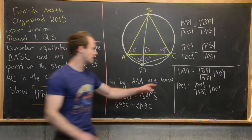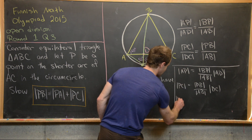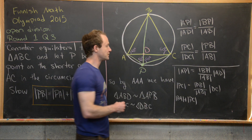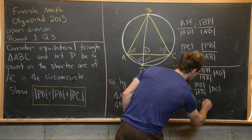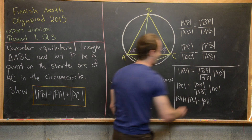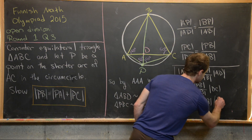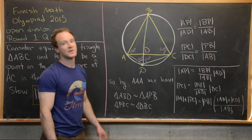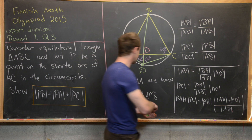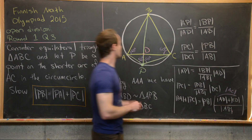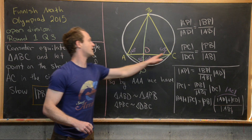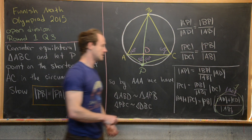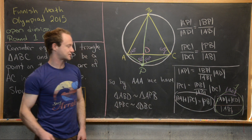Adding both sides of the equations gives PA + PC equals PB times (AD + CD) all over AB. But AD + DC equals AC, and since this is an equilateral triangle, AC equals AB. So that fraction equals one, which leaves us exactly with PB = PA + PC — our goal expression for this problem.